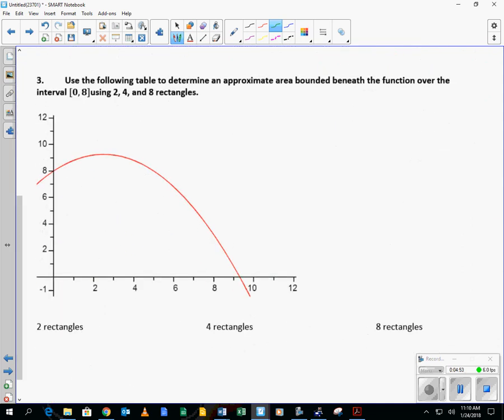So number three. Use the following to determine the approximate area bounded beneath the function over the given interval, zero to eight, using two, four, and eight rectangles. If I have two rectangles over an interval of eight units, so I'm going to start at four, right? The width of each one is going to be four. And so do I draw the height at zero or at four? At four. What would you approximate the height to be there? I would agree nine. That's fine. You can say eight and a half. That's okay. It's free country. And then I evaluate the next height at eight. What are you going to say? Three. So you have four times nine plus three is going to be 48.